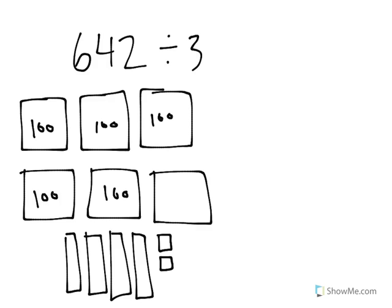So here we have our six hundreds for 600, then down below we have our four tens, and these are ones for the two ones.